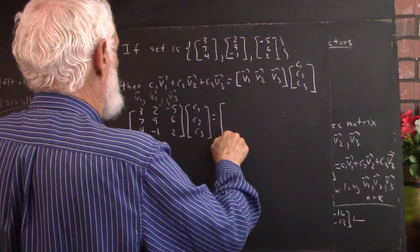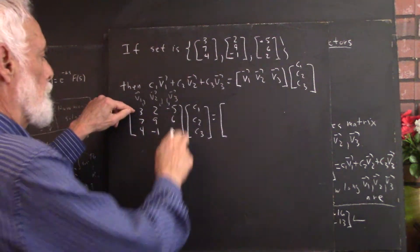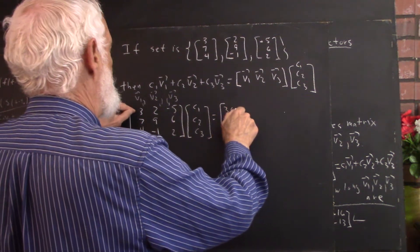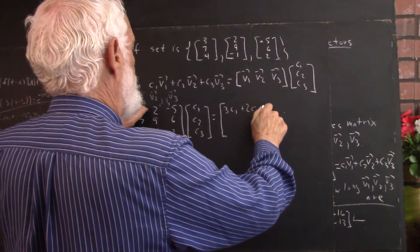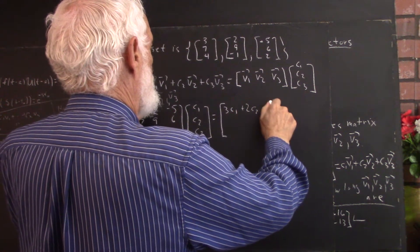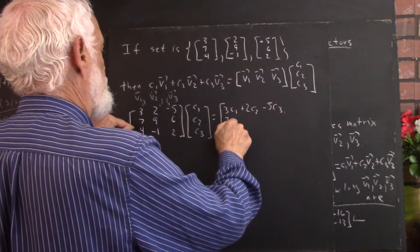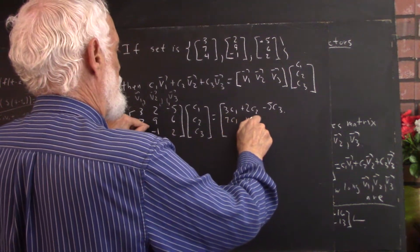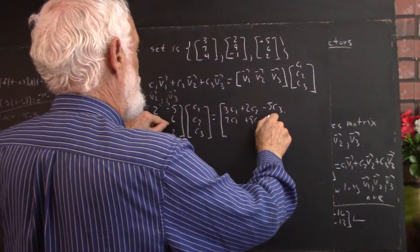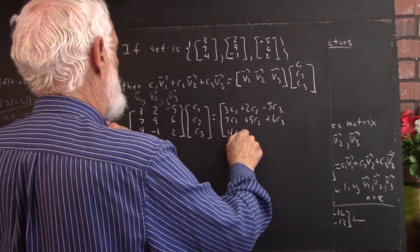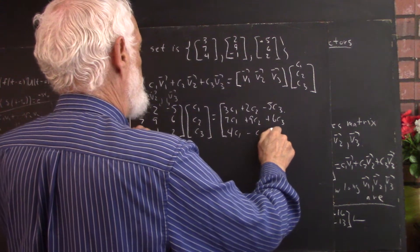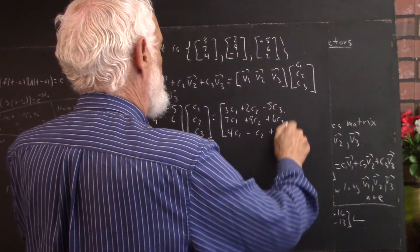This equals what? 3c1 + 2c2 - 5c3. 7c1 + 9c2 + 6c3, 4c1 - c2 + 2c3.